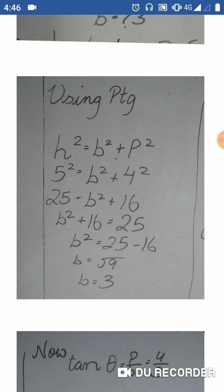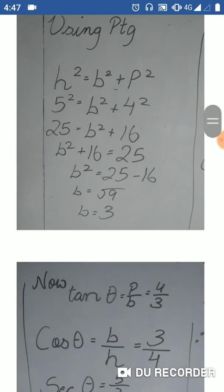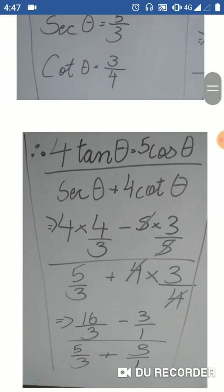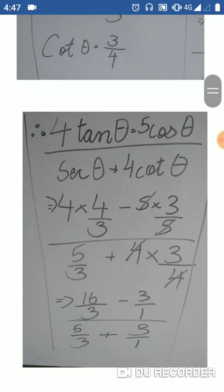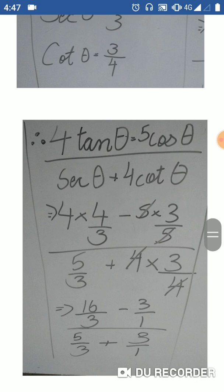Here we can explain it. The question is: substituting the values — 4 into 4 by 3, minus 5 into cos theta which is 3 by 5, divided by 6 into 5 by 3, plus 4 into 5 by 4.